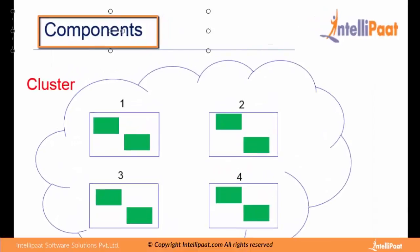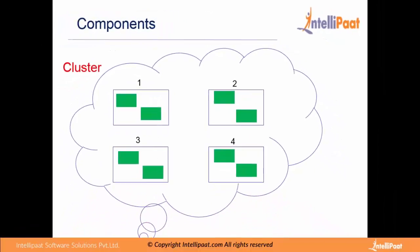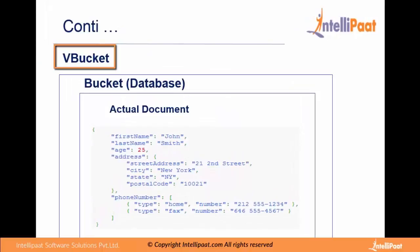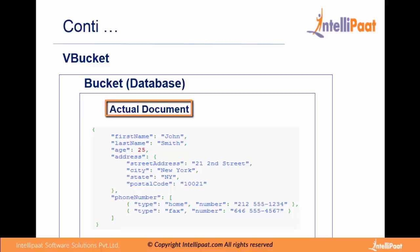Let us see what the components inside Couchbase are. A cluster will have a defined number of nodes, and each of these nodes will run Couchbase services. Inside each node we will have VBuckets, which are nothing but partitions. These VBuckets are assigned to a bucket. You can consider a bucket as a database, and the actual documents reside in the bucket. Each document holds the key-value pairs of the data.